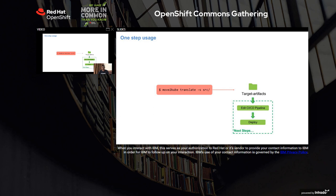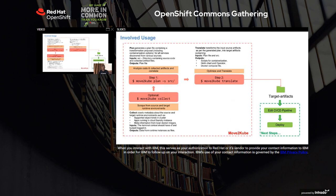Move2Kube can be consumed in multiple ways. The simplest is a single command flow where you invoke the Move2Kube translate command pointing to the source folder. It will interact with you and create all the target artifacts necessary for deploying that application, which you can put into your CI/CD pipelines or deploy directly to your cluster. For more complex scenarios, Move2Kube can be consumed as a two-step or three-step process. In a two-step process, you first run the plan phase pointing to the source folder, which analyzes it and gives you a plan of services identified and how it plans to translate.